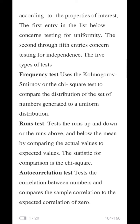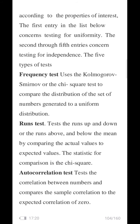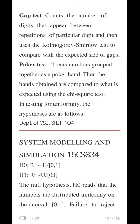The autocorrelation test tests the correlation between the numbers and compares the sample correlation to the expected correlation. Again, it tests the correlation between numbers and compares the sample correlation to the expected one — correlations of 0. Then we have the gap test, the fourth category, which counts the number of digits that appear between repetitions of a particular digit.